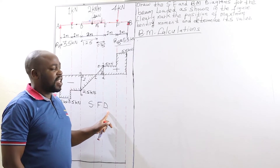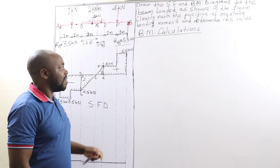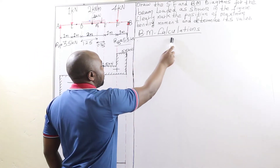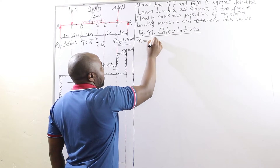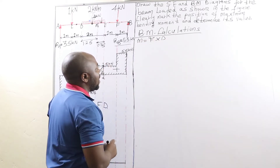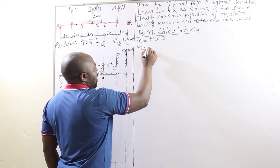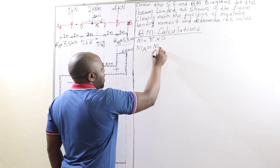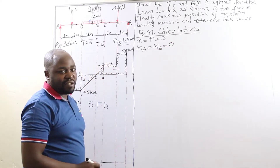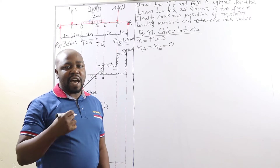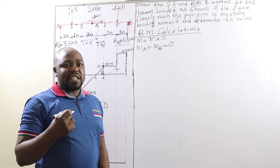Therefore, what we are remaining with is plotting the bending moment diagram. We have bending moment calculations. Remember, moment is given by force times distance. The bending moment at support A as well as the bending moment at support B are equal to zero. Remember, bending moment at the supports of a simply supported beam is always zero.